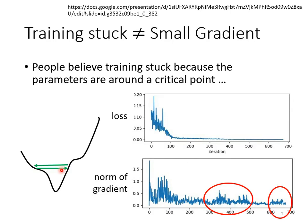You have to pay attention to this. When you train a network and find that your loss no longer decreases, don't just say 'I'm stuck in a local minimum' or 'I'm stuck at a saddle point.' Sometimes neither is true. That's why in homework 2-2, there will be an assignment for everyone to calculate the norm of the gradient, in order to know whether you are stuck at a saddle point or critical point.